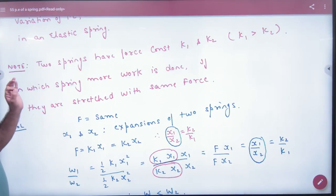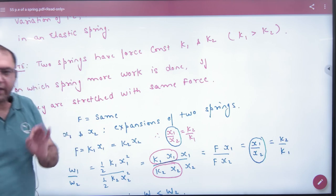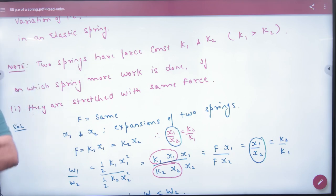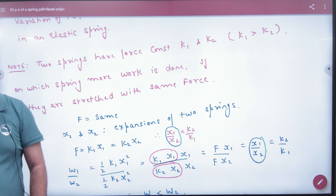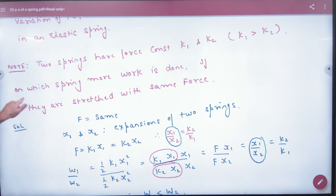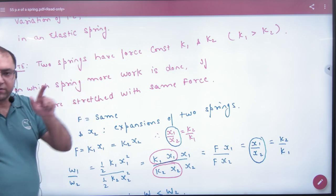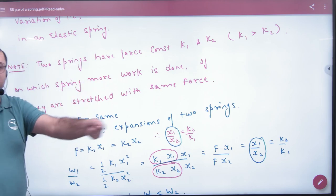Question is, two springs have force constant K1 and K2. If spring constant is big, it's stiff, and K2 is small. On which spring more work is done? Where should we have to work more in stretching?